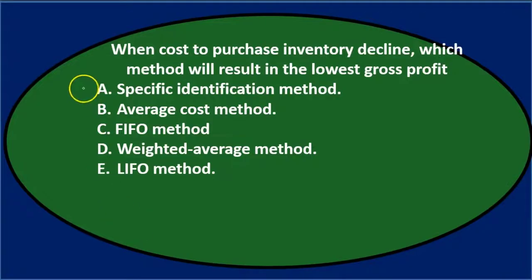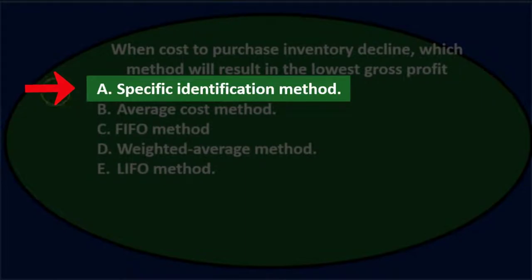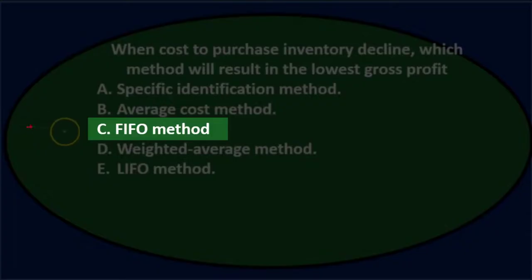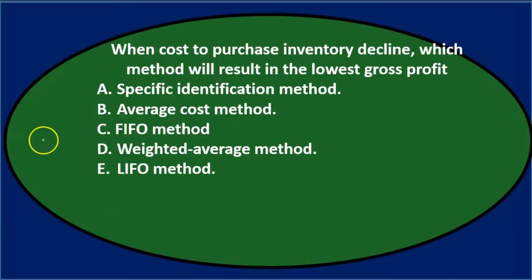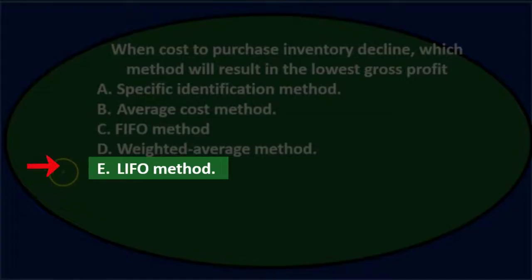First question. When costs to purchase inventory decline, which method will result in the lowest gross profit? A. Specific identification. B. Average cost method. C. First in, first out — FIFO method. D. Weighted average method. Or E. Last in, first out — LIFO method.